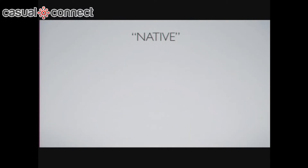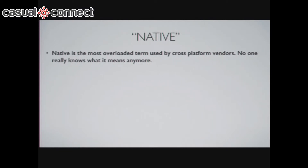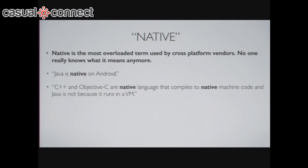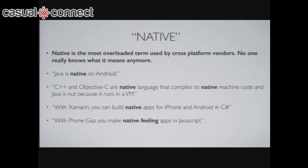So, "native" — this is one that really gets on my nerves. It is the most overloaded term by all cross-platform vendors; no one really knows what it means anymore. You hear things like Java is native on Android, and C++ and Objective-C are the native languages that compile to native machine code and Java isn't because it runs on a VM. With Xamarin, you can build native apps for iPhone and Android in C#. With PhoneGap, you can have native-feeling apps using JavaScript. This is a marketing buzzword — nothing is really native like you think it is if they're claiming cross-platform, because if you're cross-platform, you're really not native to anything.